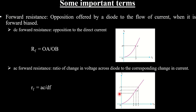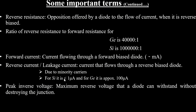That is the difference between DC and AC forward resistance of a diode. DC parameters are represented by capital letters and AC parameters by small letters. Next, reverse resistance is the opposition offered by a diode to the flow of current when it is reverse biased. The ratio of reverse resistance to forward resistance is 40,000:1 for germanium and 1,000,000:1 for silicon — silicon has much greater reverse resistance.